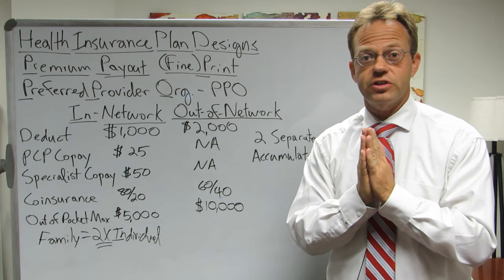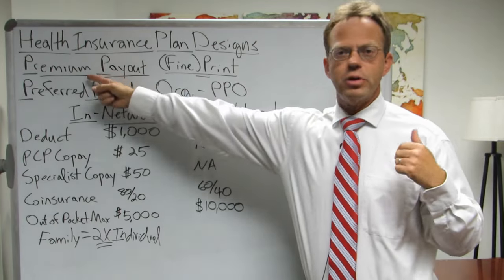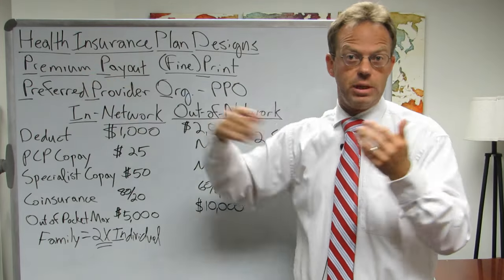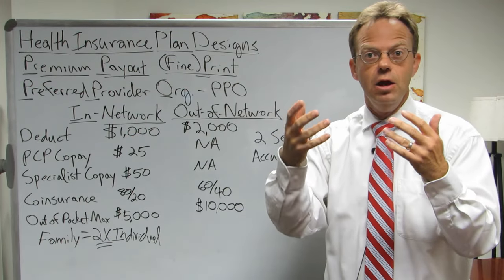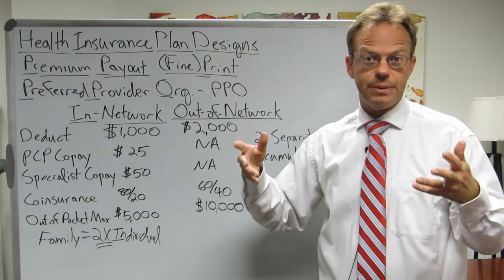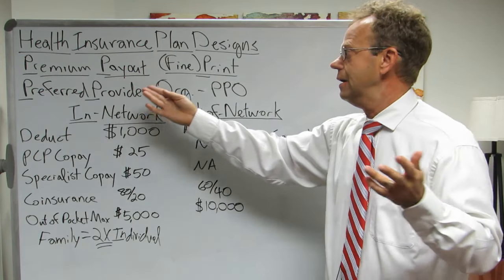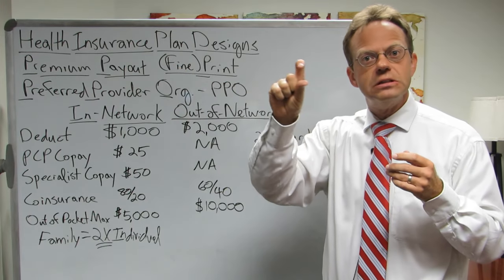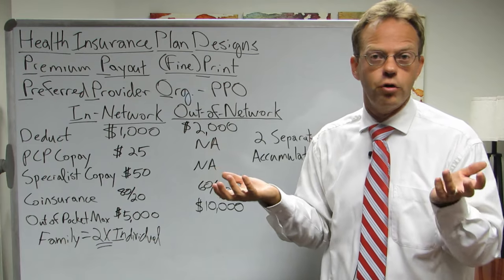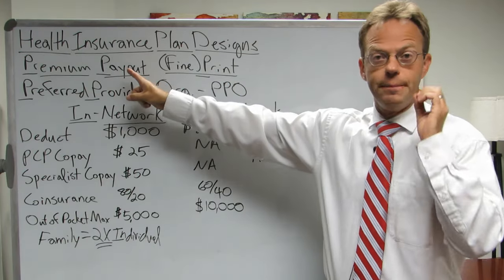In plan designs, it's important to understand that all insurance policies have three parts when it comes to the consumer. Those three parts are: the premium — what you have to pay — and this applies to car insurance, life insurance, and health insurance. The second part is the payout: if you need to file a claim, how do you get paid back, which involves the deductible and how insurance kicks in. Plan design is really the design of the payout. Finally, there's the fine print — all the little details, like auto insurance that doesn't cover glass or tires. In another video we'll talk about fine print, but today's video is specifically about the payout, which is the plan design.